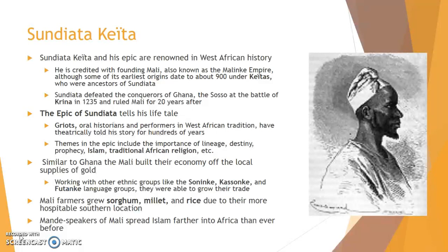The Epic of Sundiata: griots, who inherit their vocations as oral historians and give performances often accompanied by drums and koras, have theatrically conveyed Sundiata's life and accomplishments for some 800 years. There are several versions of the Sundiata epic, including an entertaining and educational film, 'Keita: The Heritage of the Griot,' although the film only covers Sundiata's life until his exile in his 20s. Themes include the importance of lineage, destiny, prophecy, Islam, traditional African religion, perseverance, right action, and the tension between tradition and modernity.